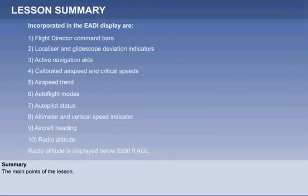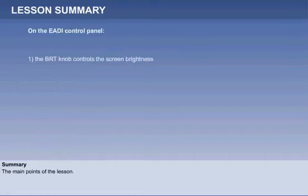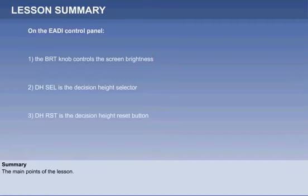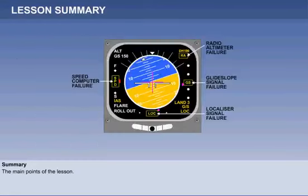Radio altitude is displayed below 2,500 feet above ground level. On the E-ADI control panel, the BRT knob controls the screen brightness. DH-Cell is the decision height selector. DH-RST is the decision height reset button. DH-REF is the decision height reference indicator. In the event of an input failure, there is a warning flag display system.